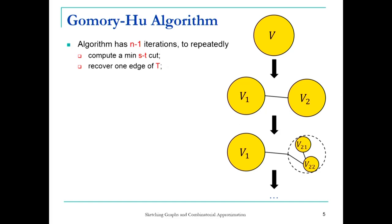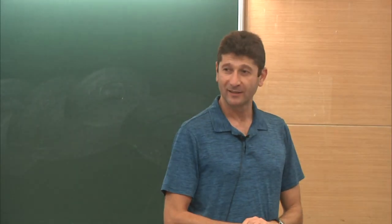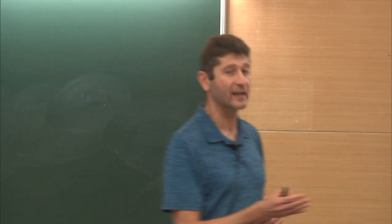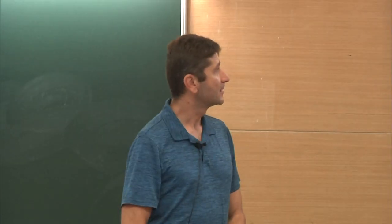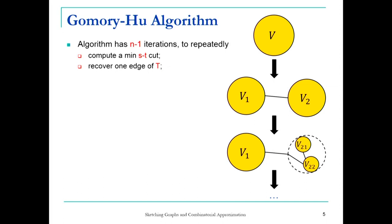Then you keep doing that: in every iteration you do the same thing — say, for V1 and then for V2. You partition V2 using one minimum cut execution, partition V2 into V21 and V22. The cut value goes on the new edge between V21 and V22. You also have to extend the previous edge — decide whether it connects to V21 or V22. You keep doing this for n-1 iterations, getting n-1 edges, and eventually you have a tree. Beautiful argument.